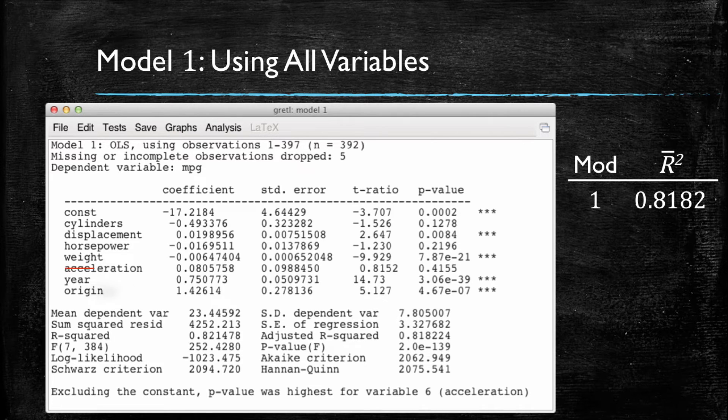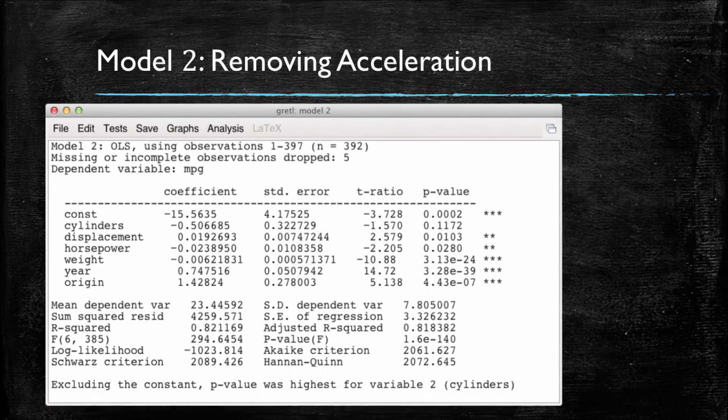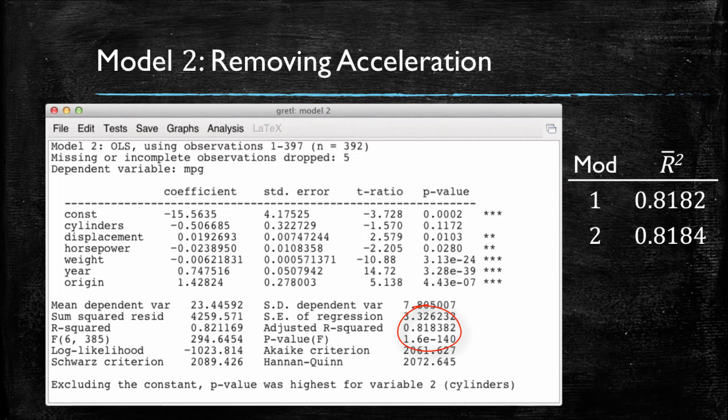When using the former strategy, we then removed acceleration because it was the variable with the least significant relationship with the dependent variable. We note that there is a very minor improvement in the adjusted r-squared in this model. The new r-squared rounded up is 0.8184. So both by the first strategy and by the second one, this model is a better one. In this case, it has a higher adjusted r-squared.